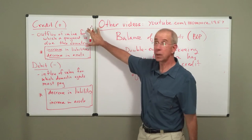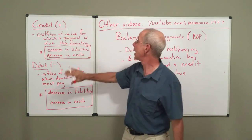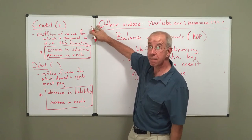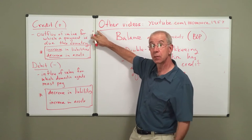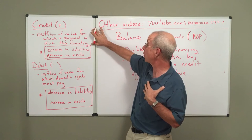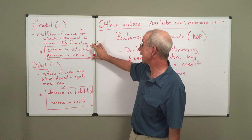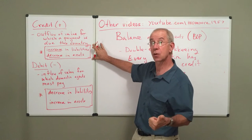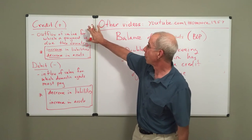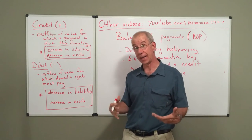Let's define what we mean by credit and debit in this international context. A credit, often designated as a plus — and that plus doesn't mean it's a good thing, it just means it's designated by that positive sign — is an outflow of value for which a payment is due to the home country. A credit will result in an increase in liabilities or a decrease in assets to the country. The debit, designated as a negative, is an inflow of value for which domestic agents must pay foreigners, and that's going to be a decrease in liabilities or an increase in assets.